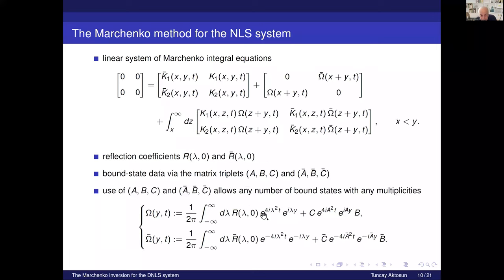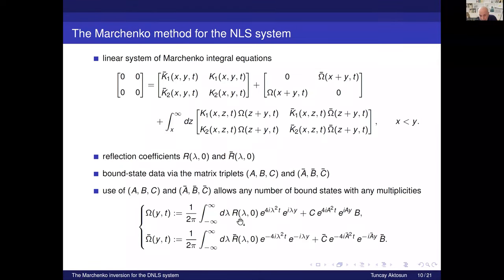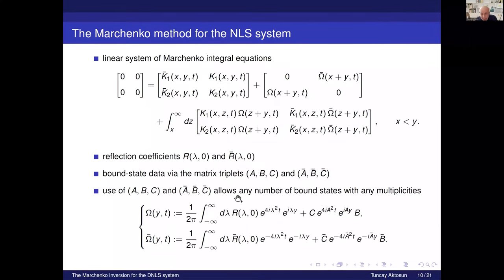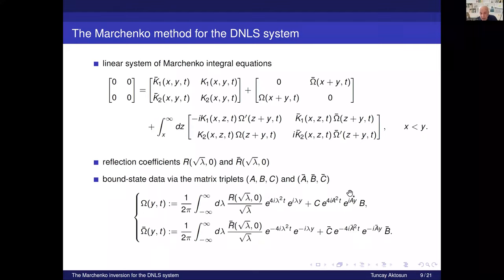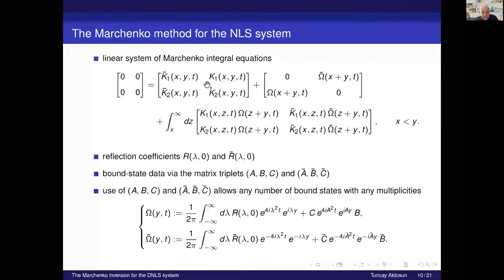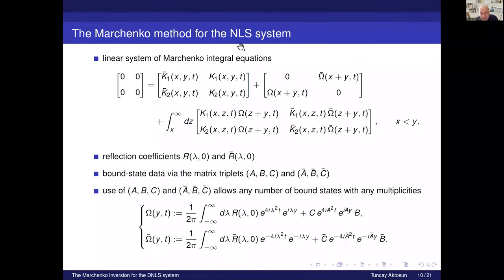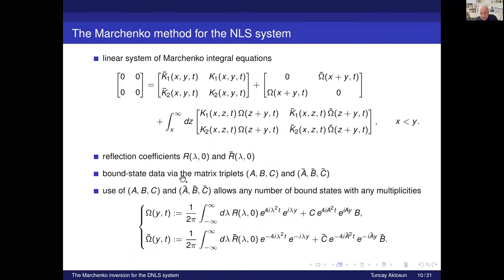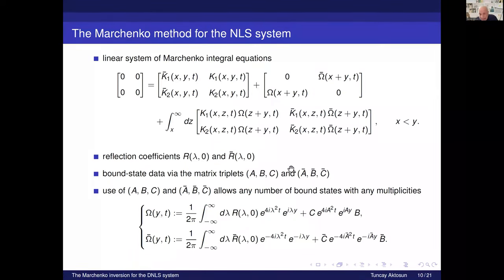Comparing the Marchenko kernel for the derivative NLS system versus the NLS system: everything is the same except for the presence of the square root of lambda factors. The bound state information is expressed in terms of matrix triplets, which has many advantages — it allows handling any number of bound states with any multiplicity. The Marchenko system for the NLS system can also handle bound states via matrix triplets.